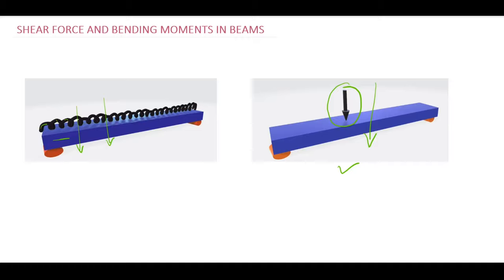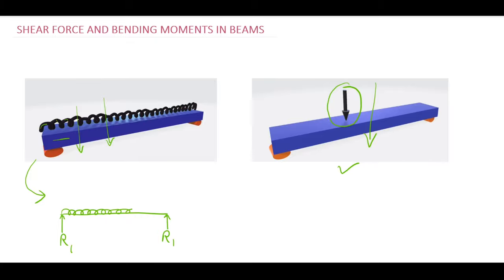We represent beams as a horizontal line when we draw the line diagram that shows various forces acting on it. A line diagram for this type of loading is a horizontal line supported from the ends by roller supports. I will mark arrows indicating the direction of the reactions on the beam. A uniformly distributed load is represented by its standard symbol, acting on the whole span of the beam.